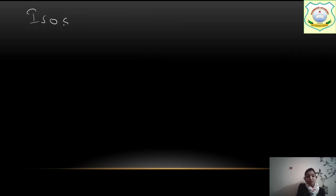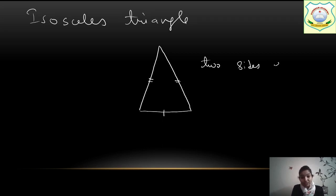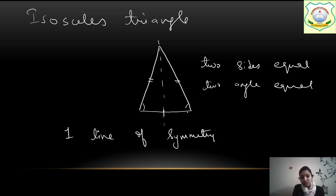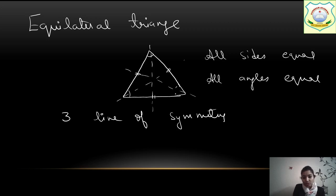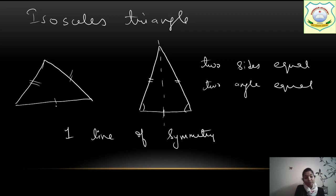Next we have isosceles triangle. As I have told you, 2 sides are equal, 1 is unequal. So represent this: 2 sides are equal, 1 side is unequal. Here write: 2 sides equal, 2 angles equal, and 1 line of symmetry. The line of symmetry will go from where it divides equally. Isosceles can be of any kind — the third side can be bigger, and the two equal sides can be shorter.